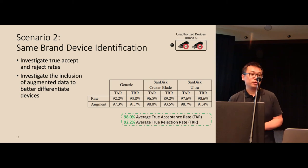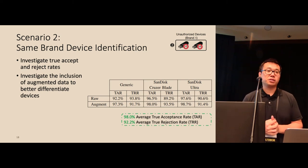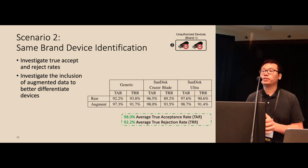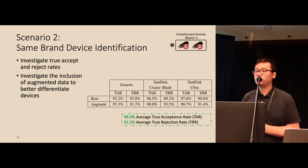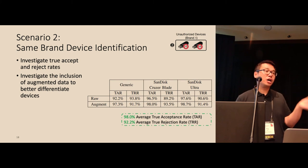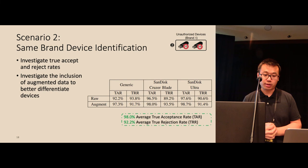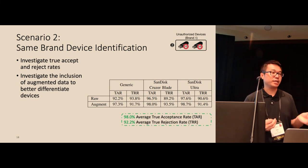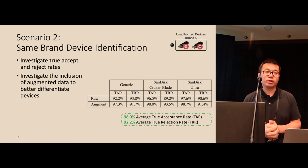For the second scenario, we're trying to identify devices belonging to the same model and brand. Again, the result is quite encouraging. We're able to achieve 98% average true acceptance rate and about 92% average true rejection rate. Remember that we're trying to reject unseen devices which we don't have data for. This indicates that Timeprint has enough information to uniquely fingerprint a USB device.